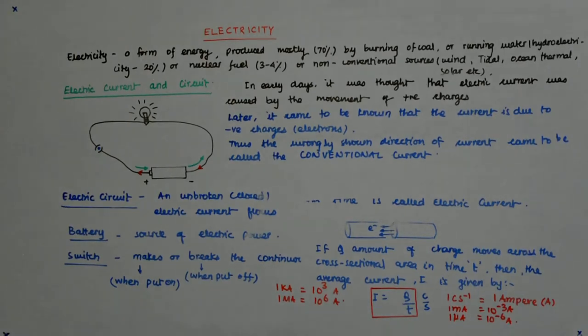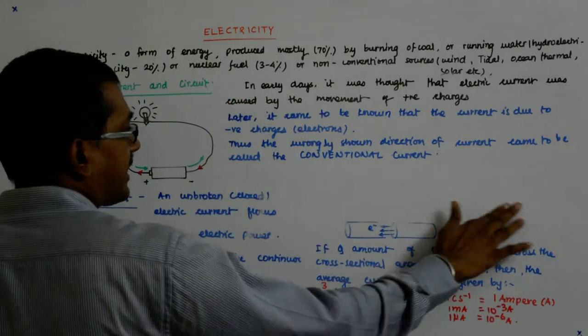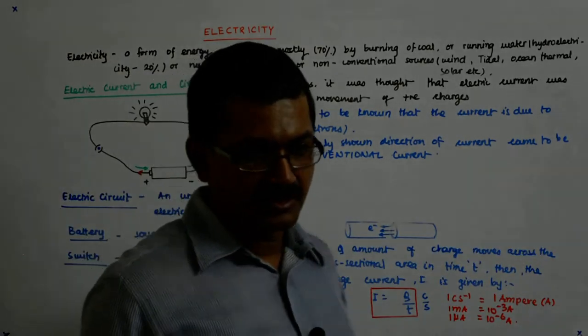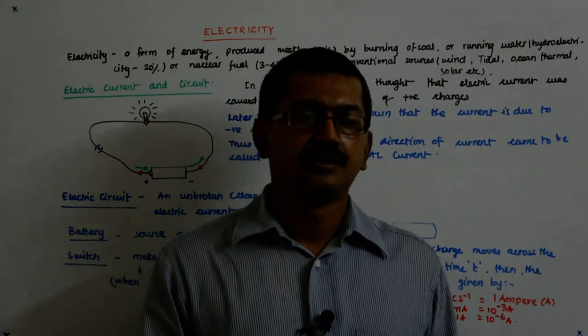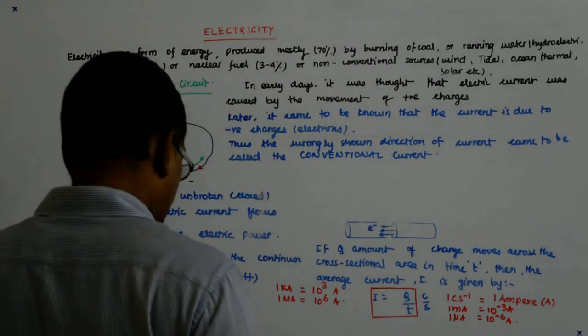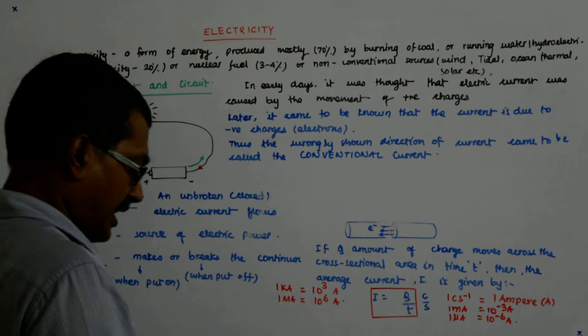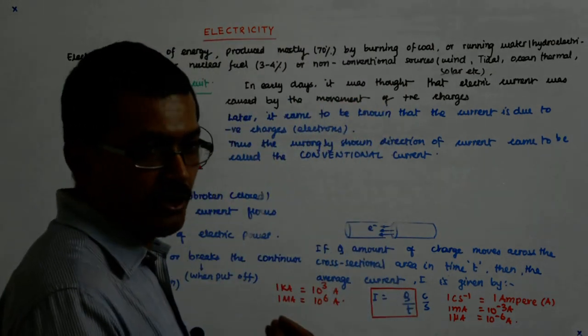So it was said that the conventional direction of current—we said that we'll make our mistakes permanent, let it be like that. We accept that we have made the mistake but we leave it like that, calling it the conventional current. And the actual direction of current, the actual flow of electrons, is actually opposite to it.